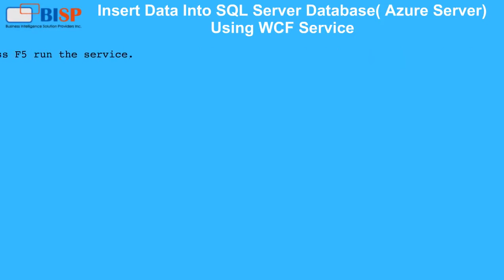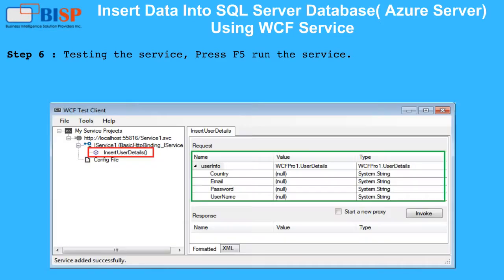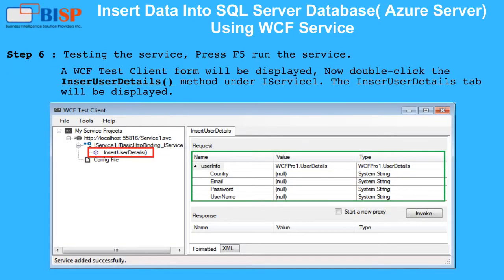Step 6: Testing the service. Press F5 to run the service — a WCF test client form will be displayed. Now double-click the Insert User Details method under iService1; the Insert User Details tab will be displayed.